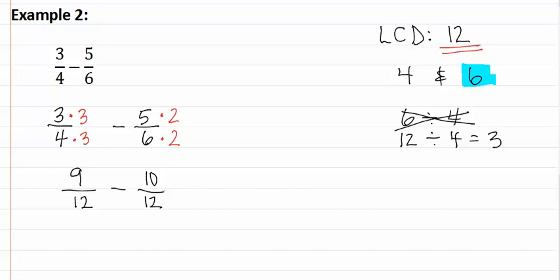Now our denominators match and we can therefore do the problem. We subtract the numerators and nine minus ten is negative one. Remember, you always keep the denominators the same which would make it twelve.